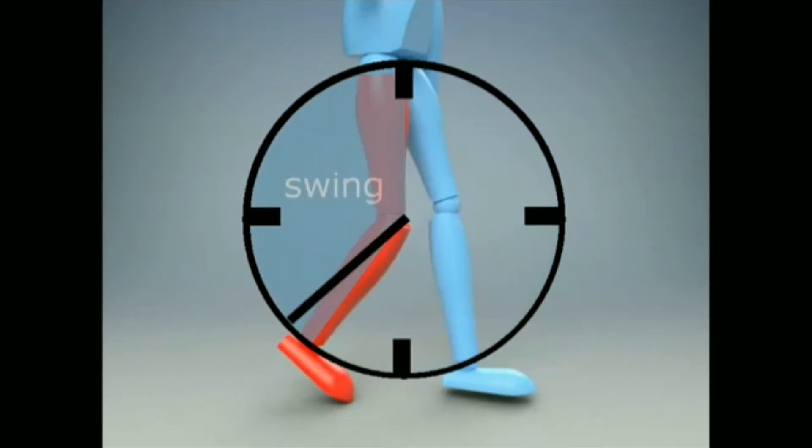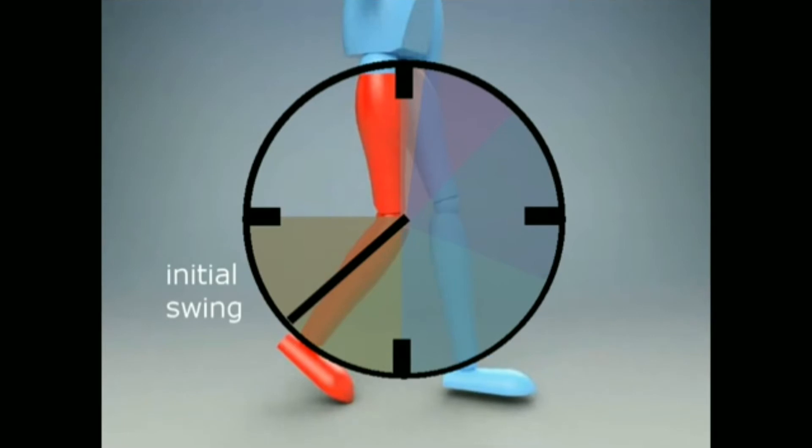Swing can be separated into three phases. Initial swing is the first 13 percent until we reach maximum knee flexion, in other words the greatest knee bend.